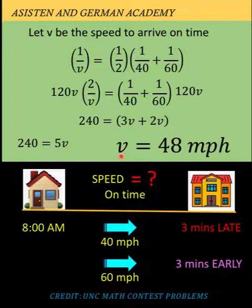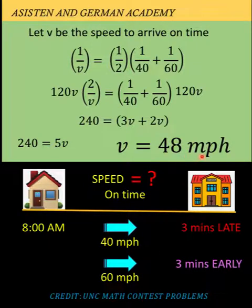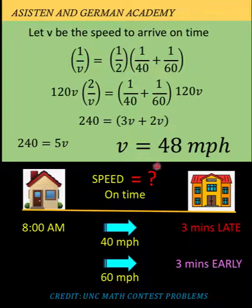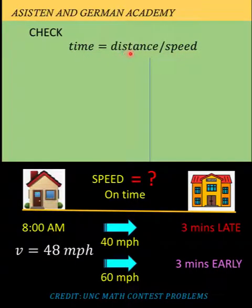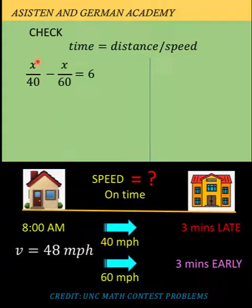We arrive at the desired speed v equals 48 miles per hour. So the speed that will enable Early Bird to arrive on time is 48 miles per hour. Now to convince us that 48 miles per hour is really the answer, let's do some checking. Time equals distance over speed, so if we let x be the distance traveled, we can represent the time as x over the speed. For the first scenario, x over 40 miles per hour minus x over 60 miles per hour gives the difference in time of 6 minutes.